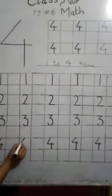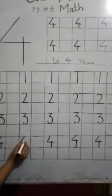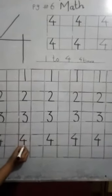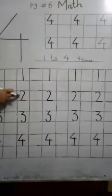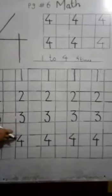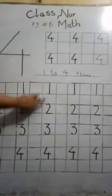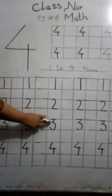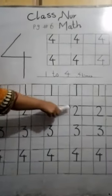Four, write four four times. Now read with me: one, two, three, four. One, two, three, four. Four. One, two, three, four. It is called four.